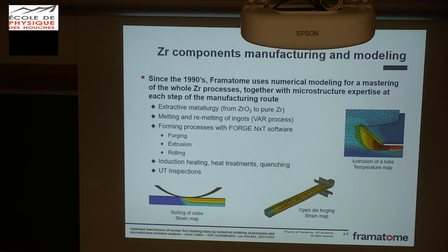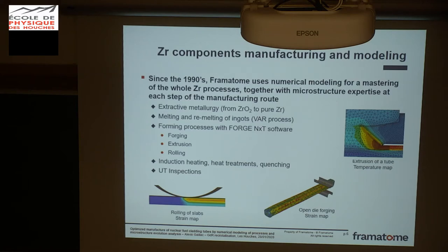To manufacture these products, we have several processes, and for each of these processes we currently use numerical modeling in order to improve the process parameters. This starts from extractive metallurgy, since we produce our own zirconium metal from zirconium oxide. Then we manufacture ingots via the VAR process, followed by forming processes including forging, extrusion, and rolling, using the Forge NXT software. We also have models for induction heating, heat treatments, quenching, and inspection of the final product.